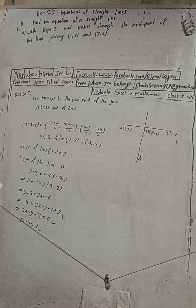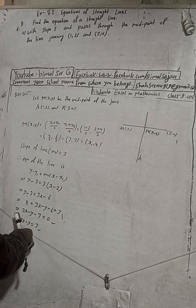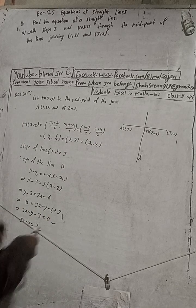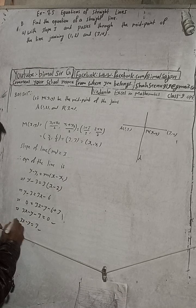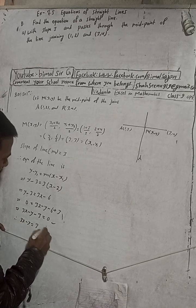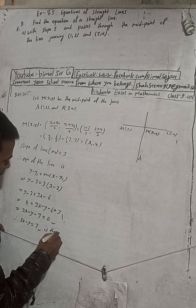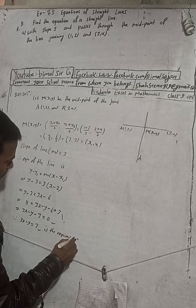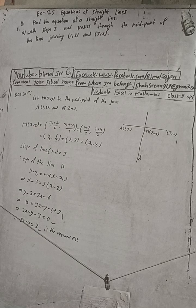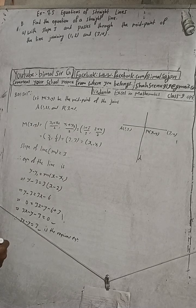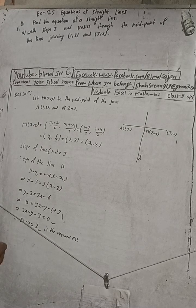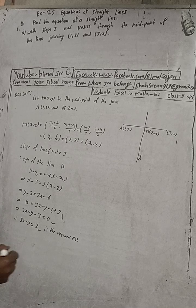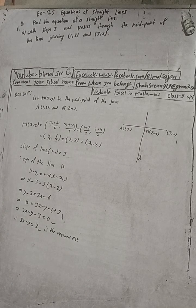In the book, the answer given is 3x minus y equals 3. You can write it as 3x minus y minus 3 equals 0 as well — both are the same. So this is the required equation. If you like these videos, share with your friends. See you in the next video!